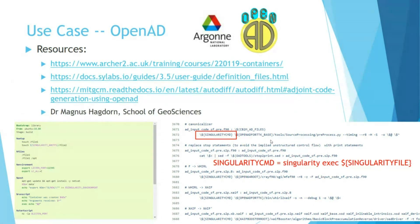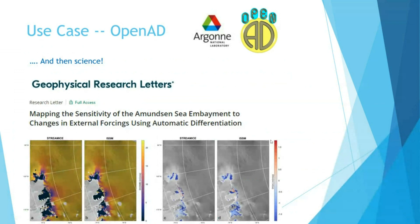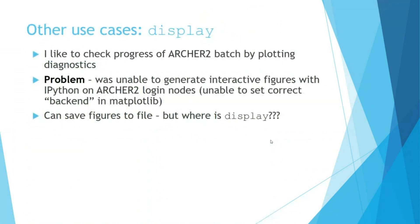Dan acknowledges Dr. Magnus Haggdorn, a research software engineer formerly at the University of Edinburgh, who provided a template of an advanced Singularity build that helped him learn how to adapt it for OpenAD. This work enabled some actual science to be done with these tools — which is ultimately the goal of these ECSE projects.